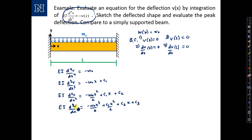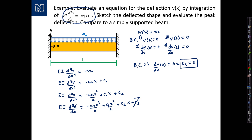We pause here and note that two of our boundary conditions apply to dV/dx, so it's appropriate to apply those and eliminate some constants of integration. Starting with boundary condition 2 — dV/dx at 0 equals 0 — the first, second, and third terms all drop out, and we're left with C3. So C3 equals 0. Now applying boundary condition 4: dV/dx at L equals negative W-naught·L³/6 plus C1·L²/2 plus C2·L equals 0.